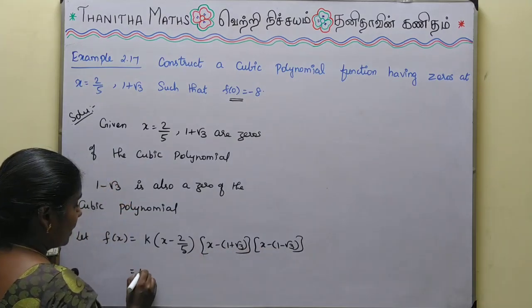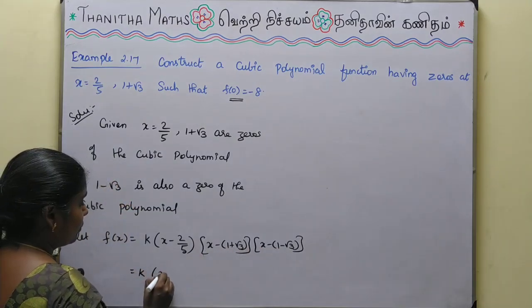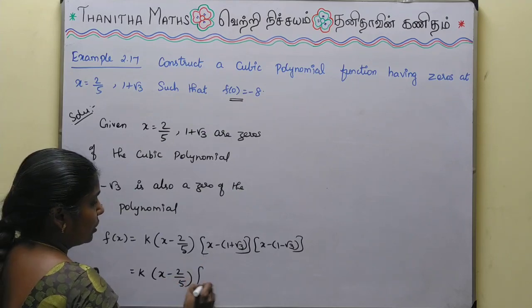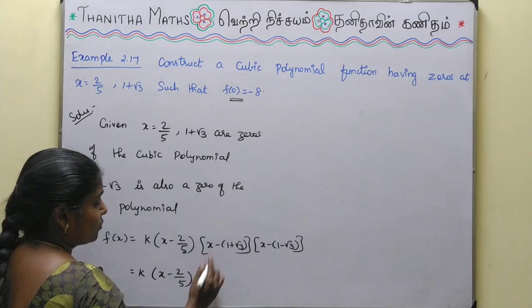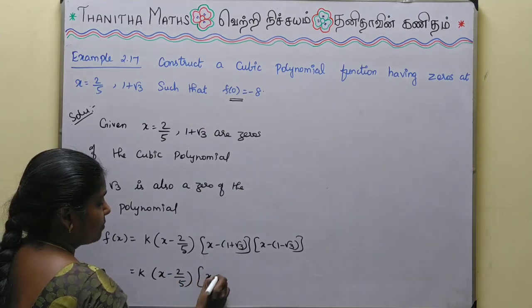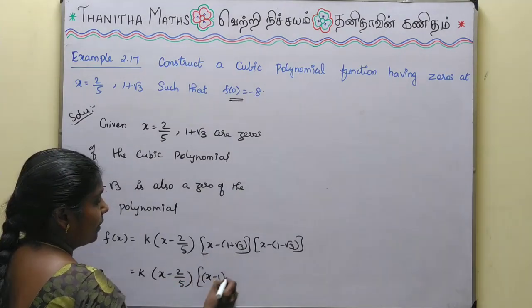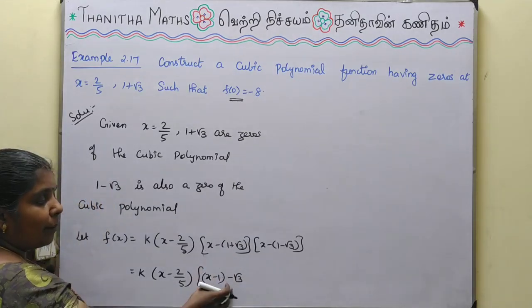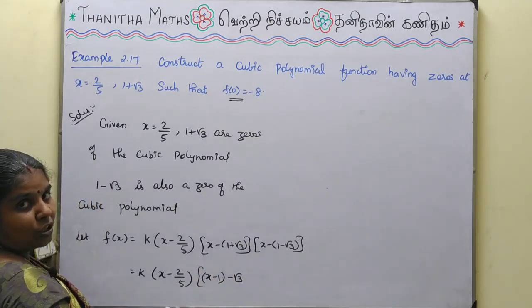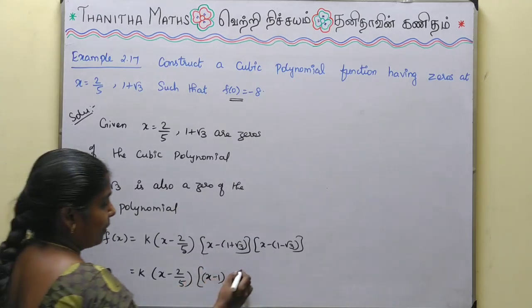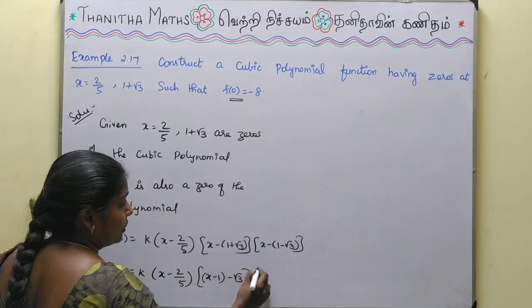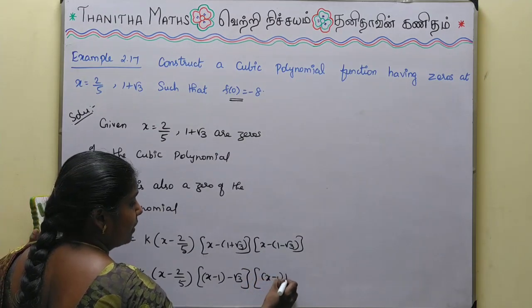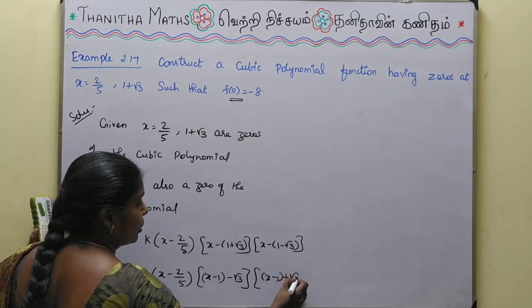We have f(x) = k · (x - 2/5) · (x - (1 - √3)) · (x - (1 + √3)).